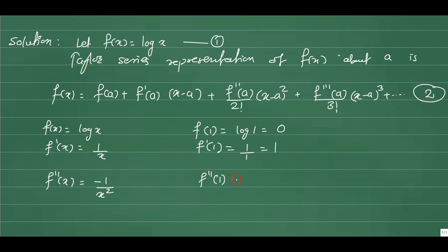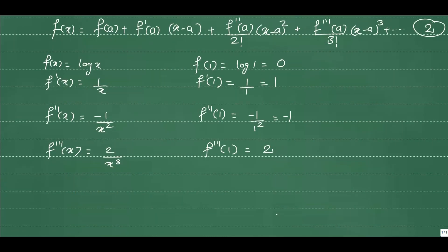The second derivative f''(x) = -1/x², therefore f''(1) = -1. The third derivative f'''(x) = 2/x³, therefore f'''(1) = 2. The fourth derivative f''''(x) = -6/x⁴, so f''''(1) = -6.